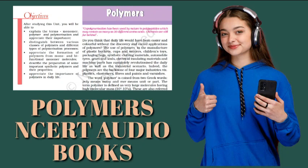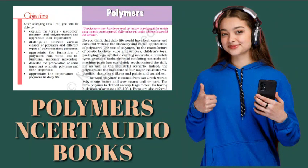Subtopic 15.2.3 Copolymerization. Copolymerization is a polymerization reaction in which a mixture of more than one monomeric species is allowed to polymerize and form a copolymer. The copolymer can be made not only by chain growth polymerization but by step growth polymerization also. It contains multiple units of each monomer used in the same polymeric chain. For example, a mixture of 1,3-butadiene and styrene can form a copolymer. Copolymers have properties quite different from homopolymers. For example, butadiene-styrene copolymer is quite tough and is a good substitute for natural rubber. It is used for the manufacture of auto tires, floor tiles, footwear components, cable insulation, etc.